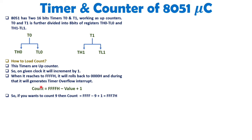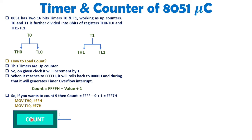Considering T0 as the timer, we load the value into timer 0 using: MOV TH0, #0FFH — loading the higher byte of timer 0 with FF hex — and MOV TL0, #0F7H — loading the lower byte with F7 hex. The count then increases with each clock pulse one by one. Once it reaches FFFF it rolls back to 0000, generating a timer overflow interrupt.